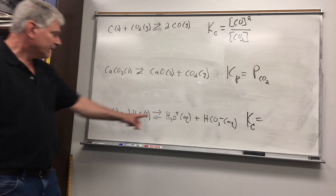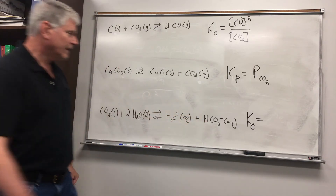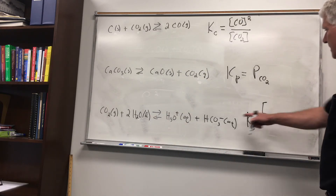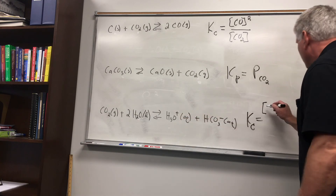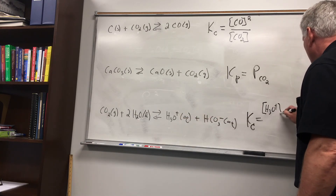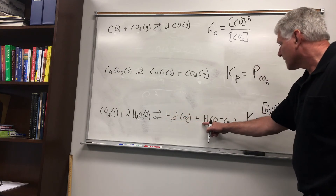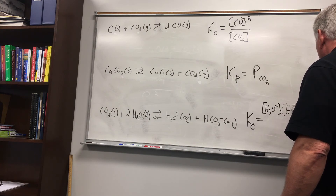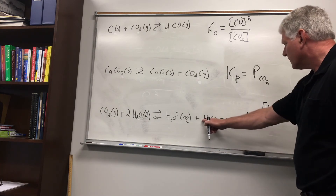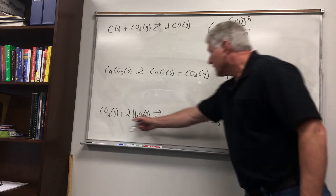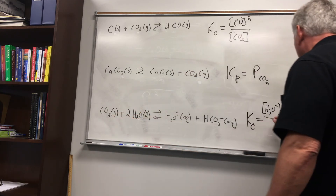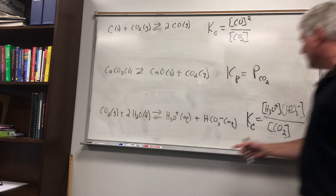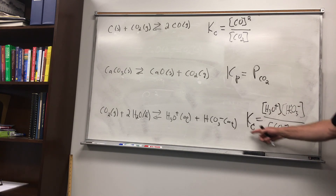We include the gas and aqueous phases. So the equilibrium constant would be the concentration of H₃O⁺ raised to the first power times the concentration of HCO₃⁻ raised to the first power, divided by the gas-phase concentration of CO₂ raised to the first power. This is the equilibrium constant for this bottom reaction.